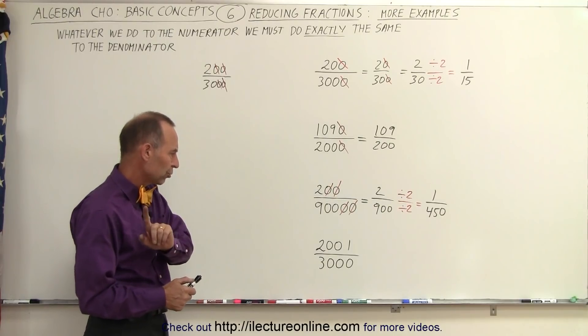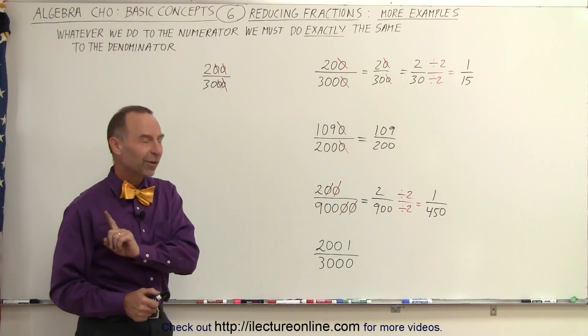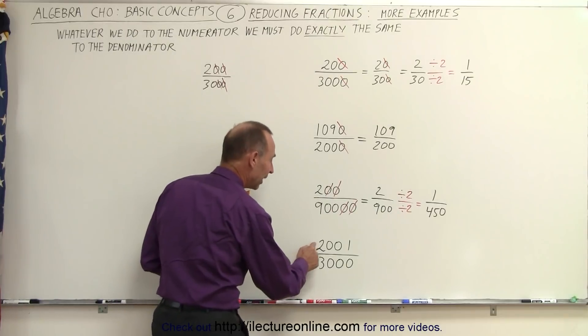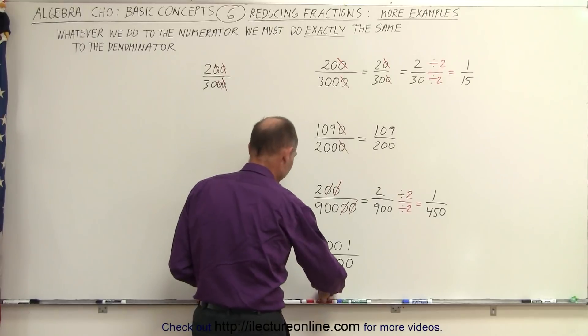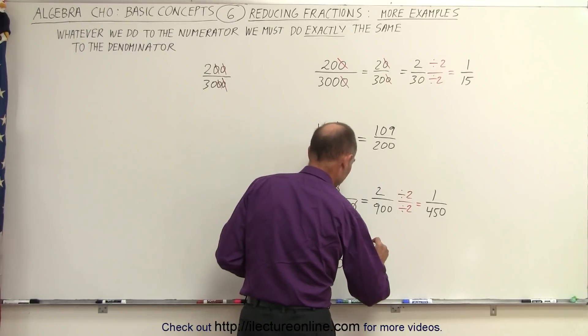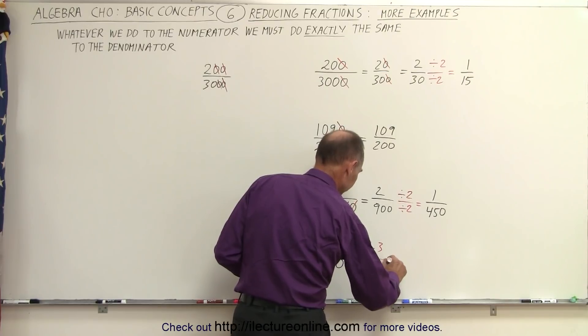Oh, wait a minute. Not true. It's not a prime number. How do I know it's not a prime number? Because 2 and 1 add up to 3. That means it's divisible by 3. We can actually divide both of them by 3. So let's try that. So divide by 3, and divide by 3, like this.